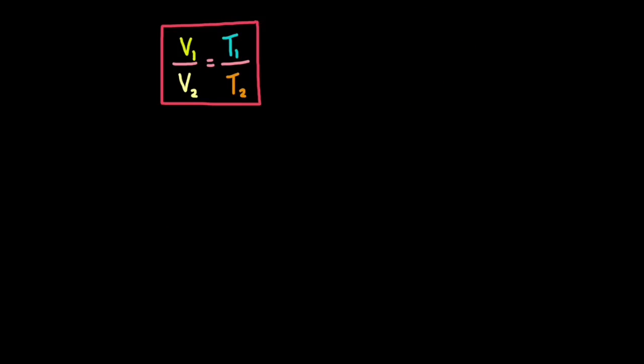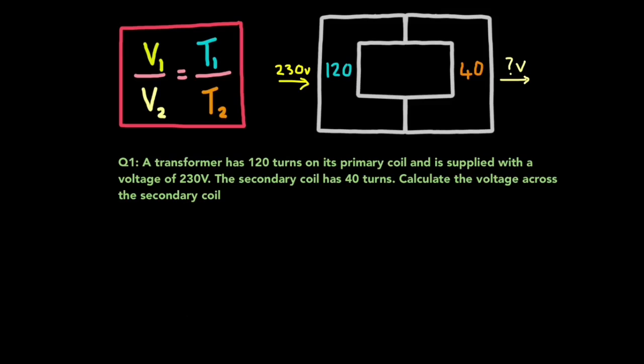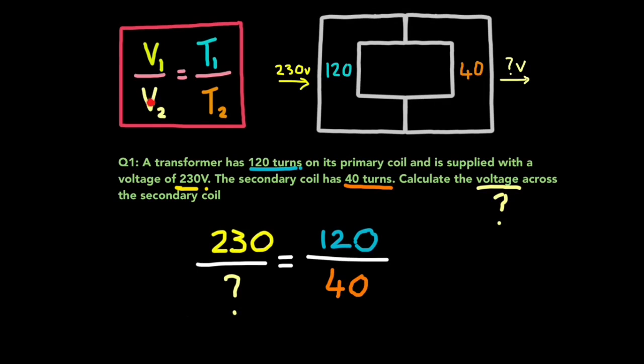So the best thing to do is just practice a few questions. Let's start off with an easy question. It says a transformer has 120 turns on its primary coil and is supplied with a voltage of 230 volts. The secondary coil has 40 turns, so calculate the voltage across the secondary coil. If it helps, just draw a diagram and plug in the figures like I did above. Obviously you can't draw 120 coils here, but write 120 on the primary coil and it might help. And as always, I recommend underlining the key components of this equation.